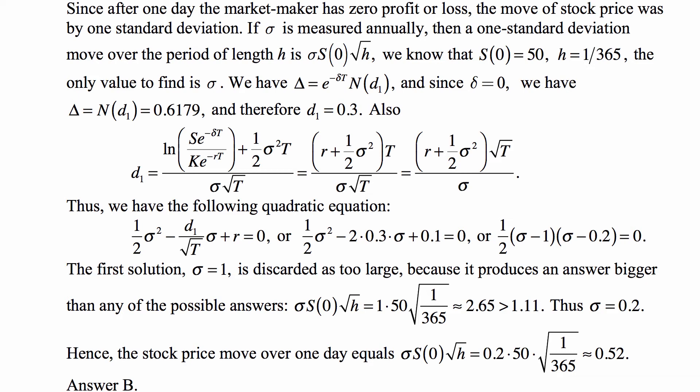So what we have is that the delta, the derivative of the price of the call with respect to the price of the underlying, is N(d1), which is 0.6179, and then we can look it up in the table that d1 is 0.3.